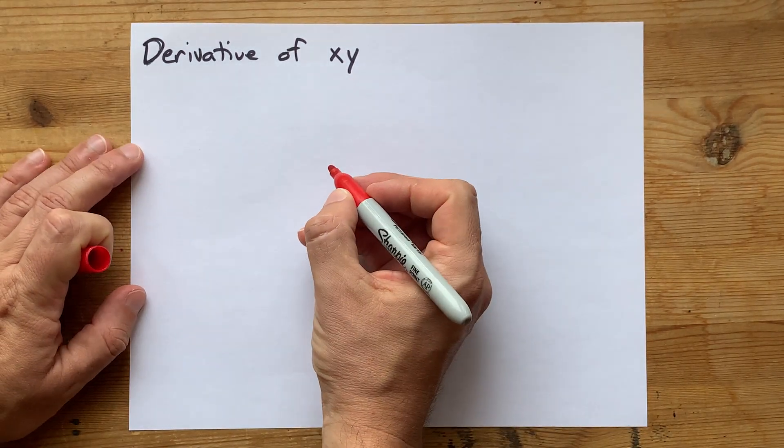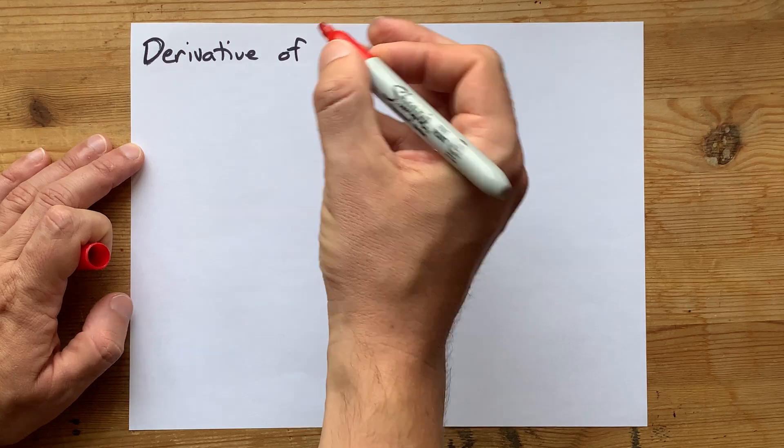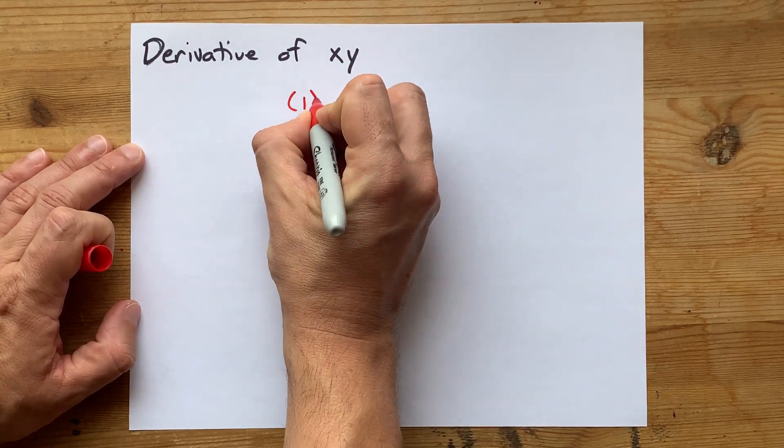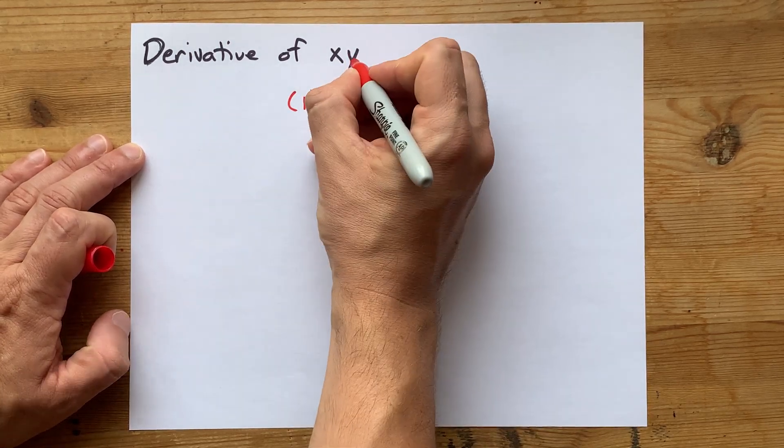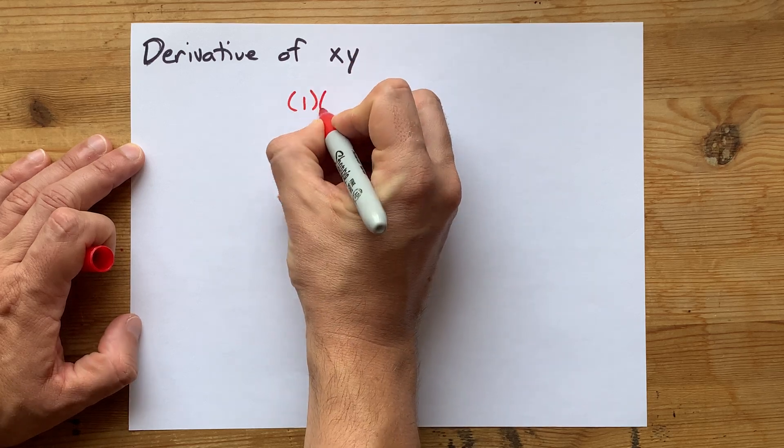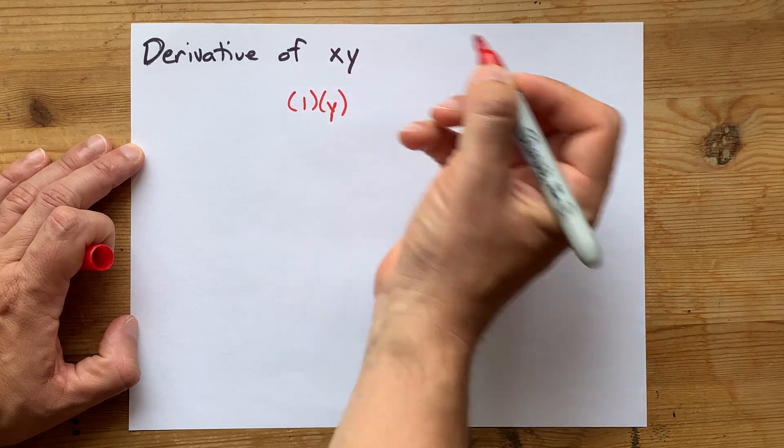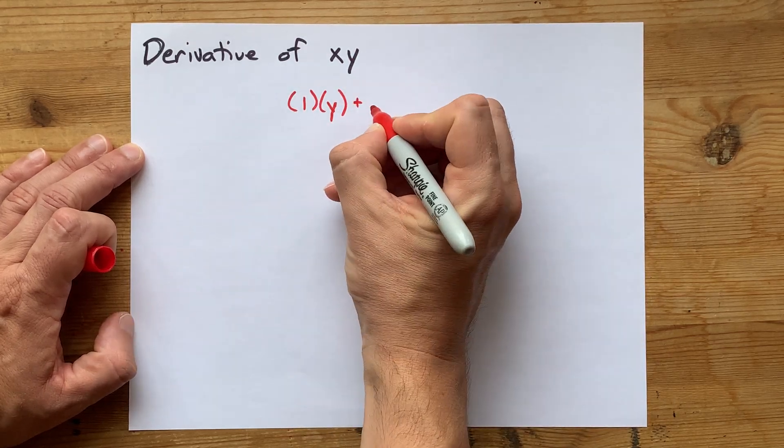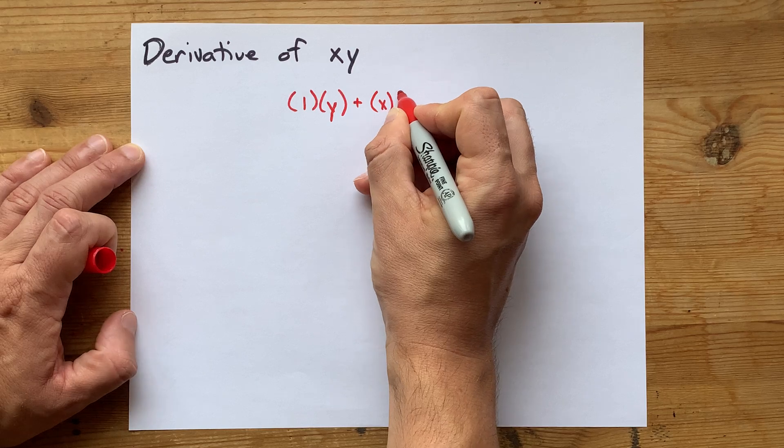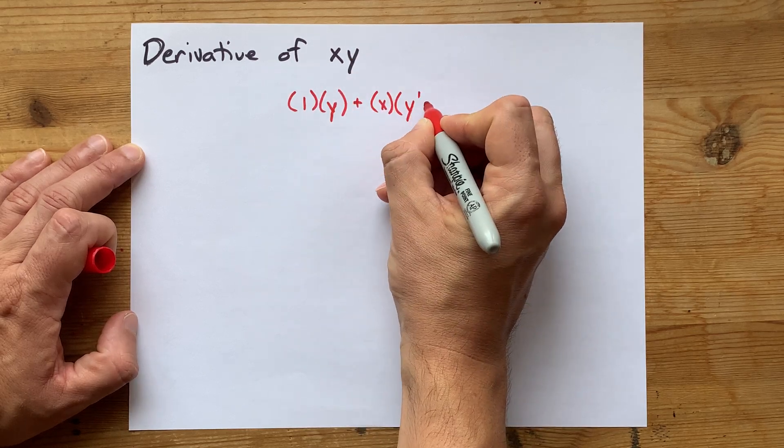So let's do this. The derivative of x is 1, and then we're going to keep the second function the way it is. That's the derivative of the first thing times the second thing as is, added to the first thing as is times the derivative of the second thing.